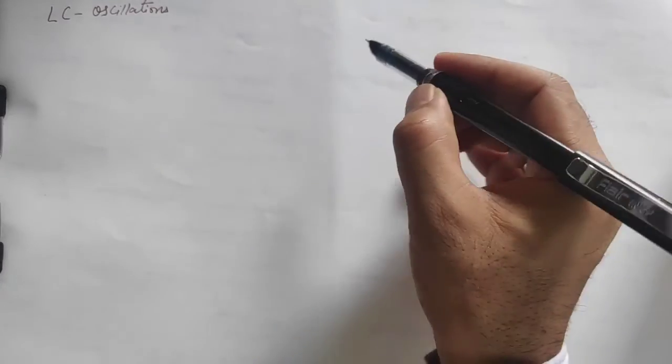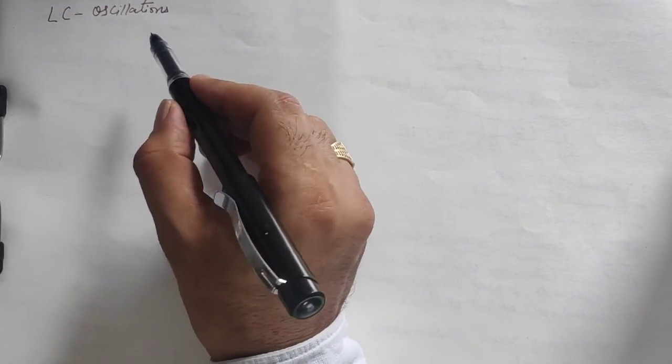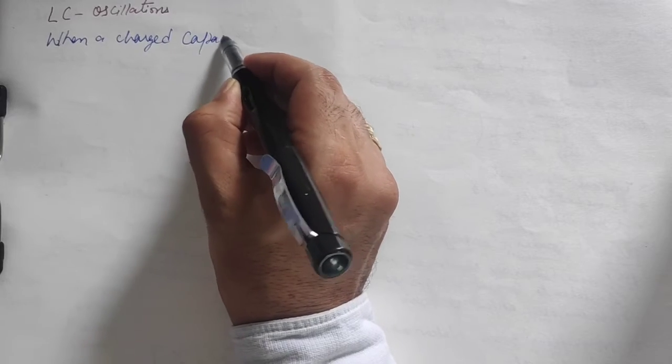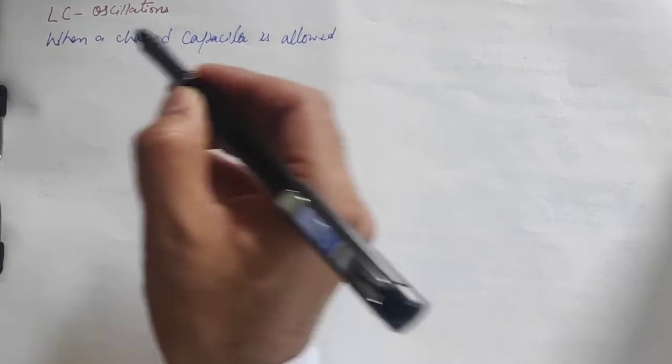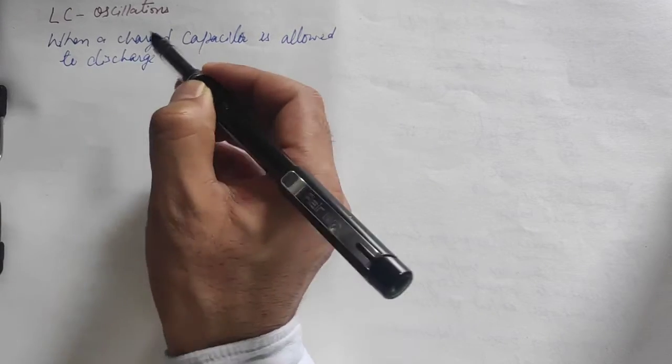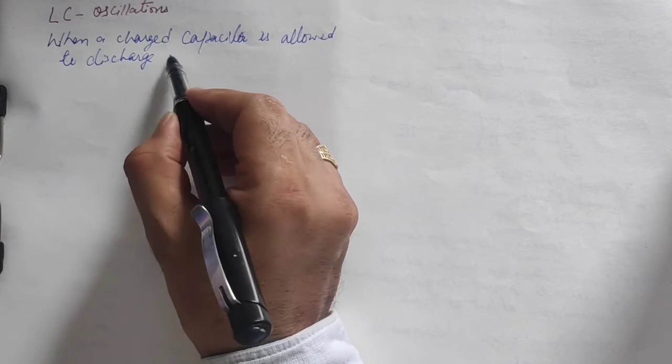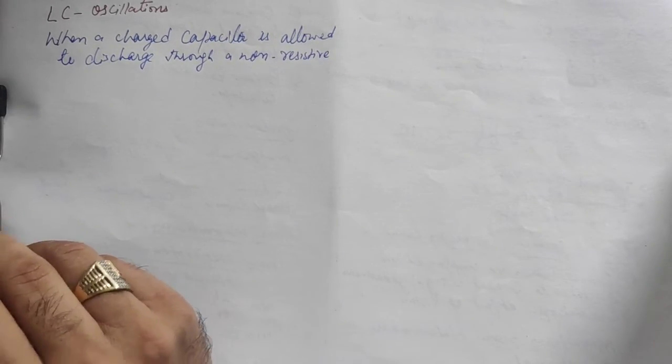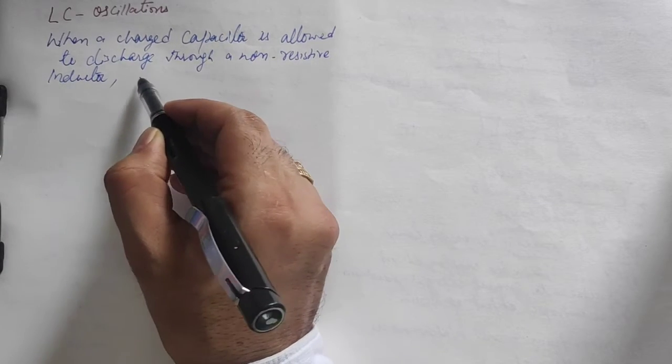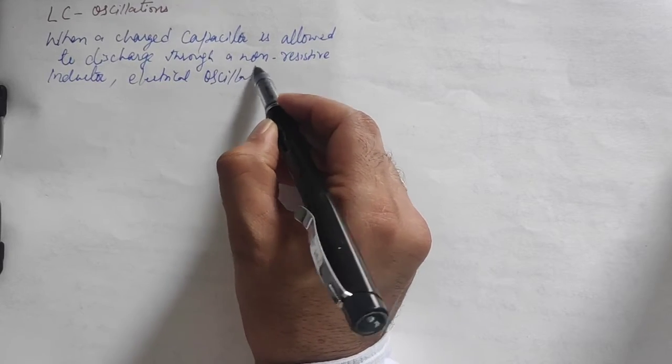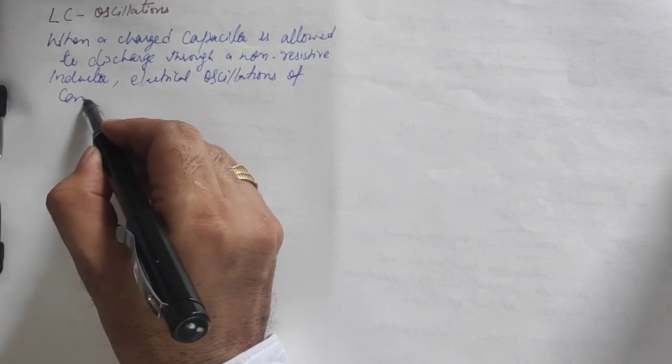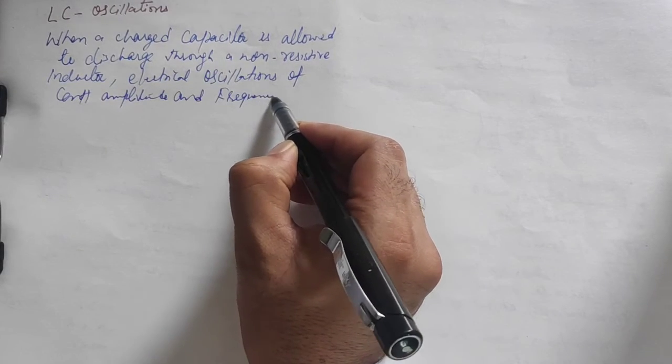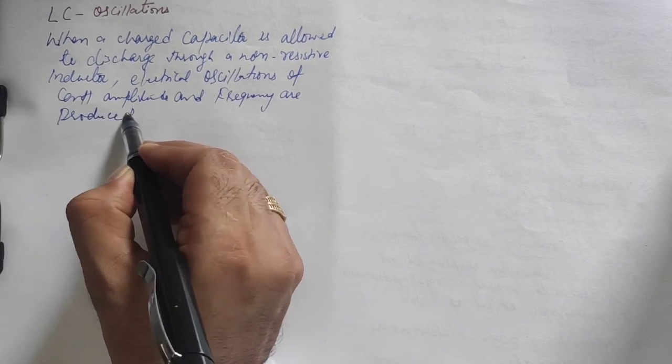We will discuss LC oscillations. First, the definition: when a charged capacitor is allowed to discharge through a non-resistive inductor, electrical oscillations of constant amplitude and frequency are produced.